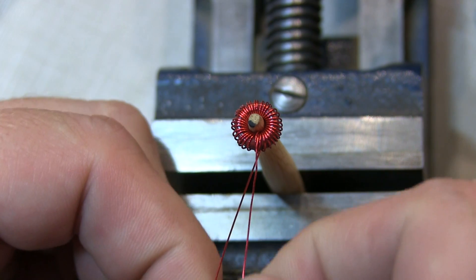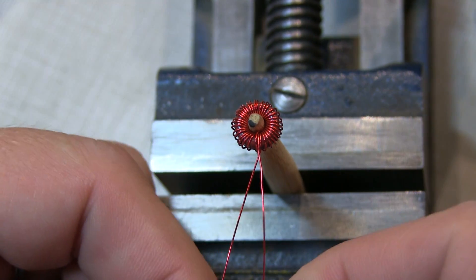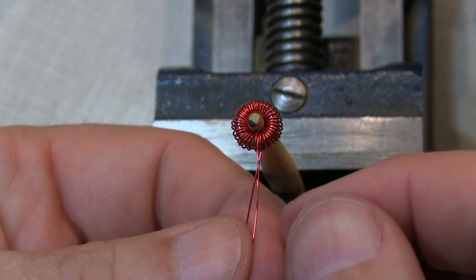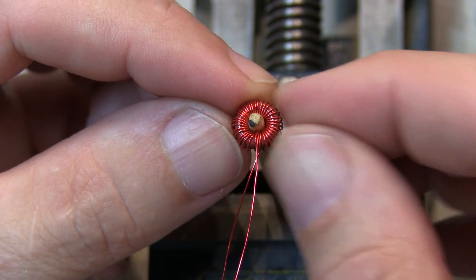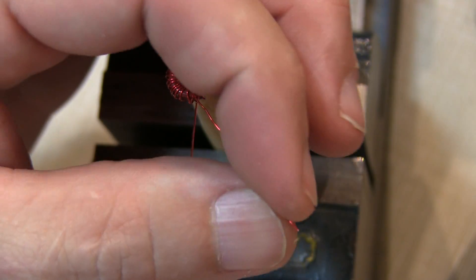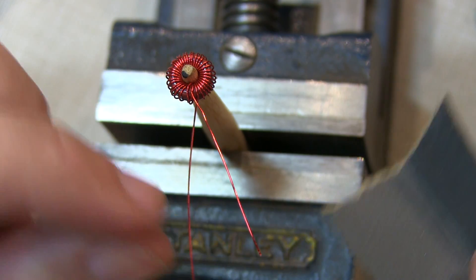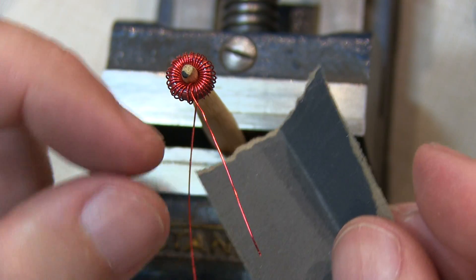The next thing we'll do is tin the leads, get the insulation off and we can make a measurement of this to be sure that we got the inductance right. One way to strip the enamel off of this type of wire is with some fine sandpaper.